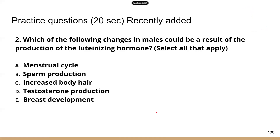Question two: which of the following changes in males could be a result of the production of luteinizing hormone? Select all that apply. This question is a little tricky because it considers indirect results of luteinizing hormone. Luteinizing hormone stimulates the production of testosterone, so D is correct. Testosterone in turn promotes the production of sperm, so B is also correct. Testosterone is also responsible for male secondary sex characteristics developed during puberty, including increased body hair. So B, C, and D are correct answers. A and E are only present in females, so they're not relevant.